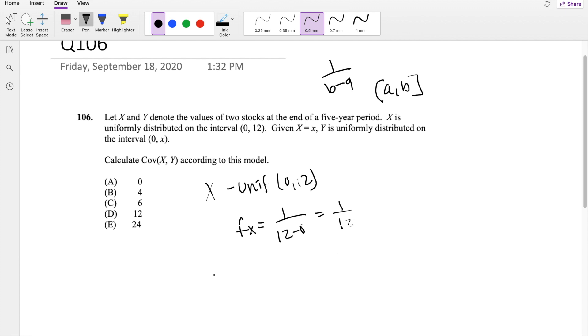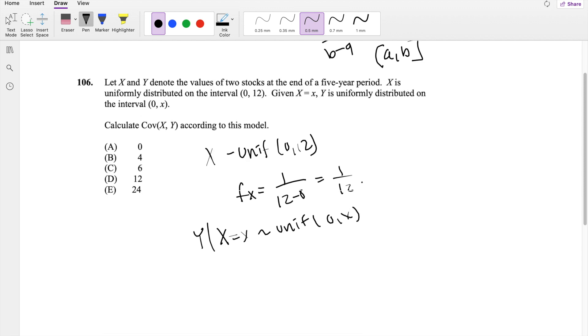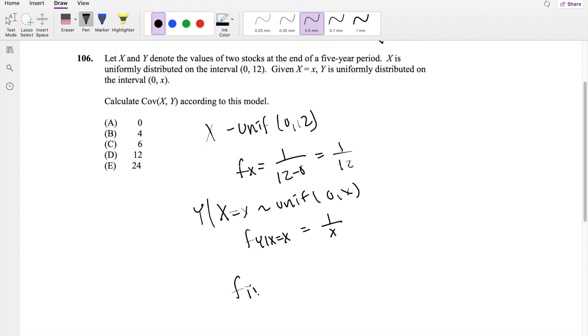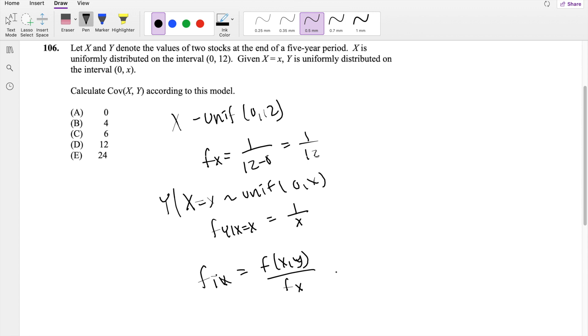Then they say, given X is equal to x, Y is also uniform on 0 to x. And using our formula for uniform distribution, we know that f of Y given X equals x is equal to 1 over x. We also know that for conditional probability distribution, this is equal to the f of X comma Y divided by the f of X, the marginal distribution of X. So then we can also say f of X comma Y is equal to the f of Y given X times f of X.